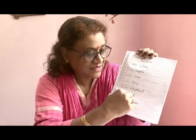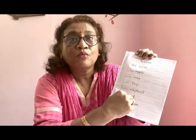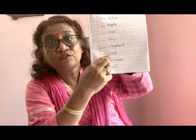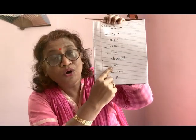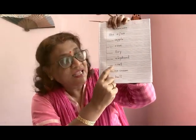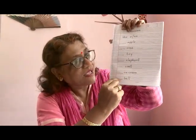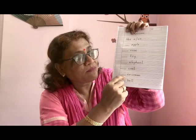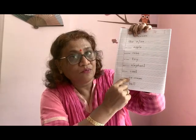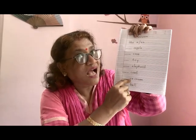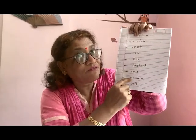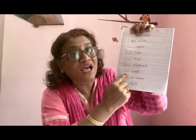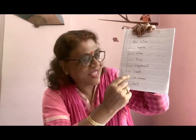Coat — C. What will you write in front of coat, children? A. Ice cream — I. I is a vowel, so what will you write? An.